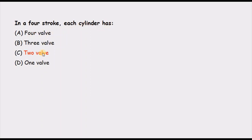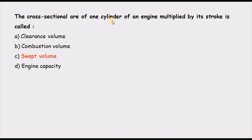In a four-stroke engine, each cylinder has how many valves? Generally, a four-stroke engine has one inlet valve and one exhaust valve. Nowadays four-valve engines also exist with two inlet and two exhaust valves, but in general the correct answer is two valves per cylinder.